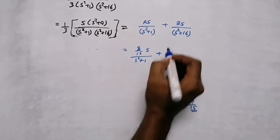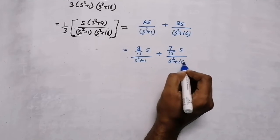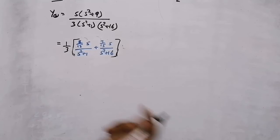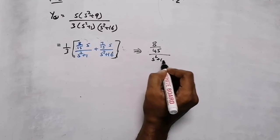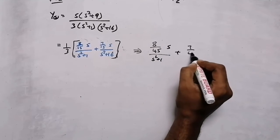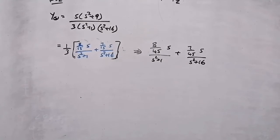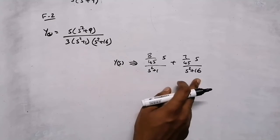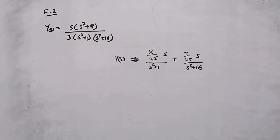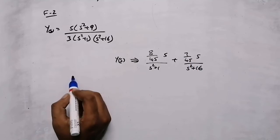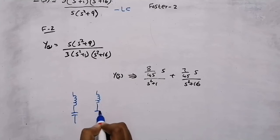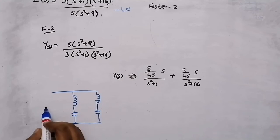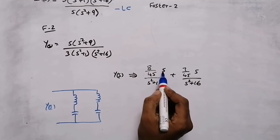Multiplying back the factor of 3: the admittance is (8/45)s over (s squared plus 1) plus (7/45)s over (s squared plus 16). This gives us two terms for Foster Form 2. In Foster Form 2, the elements are connected in parallel. Since this is an LC network, each parallel branch consists of an inductor and capacitor in series.